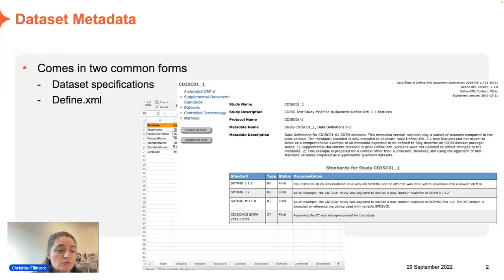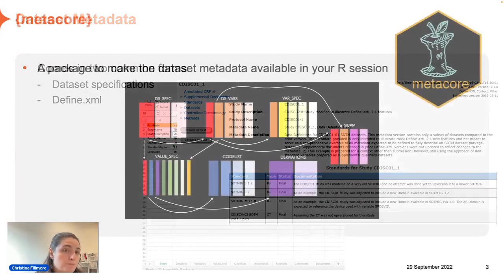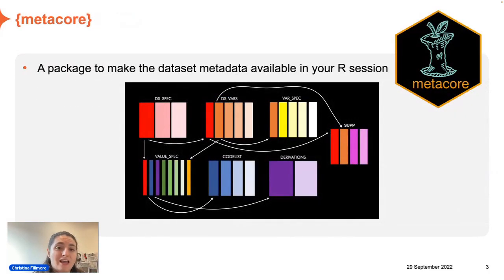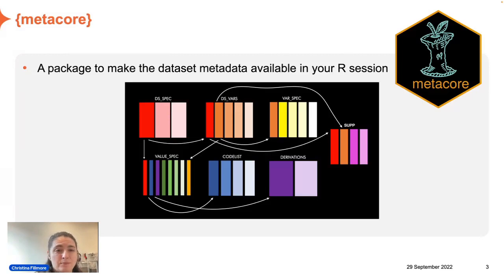Once it comes to taking a flat Excel file of specification documentation or an XML define file, there hasn't really been a great way of getting that into your R environment to start using. That's the purpose of metacore — it takes all of that information and provides readers, though other companies write their own internal readers depending on what their specification looks like.